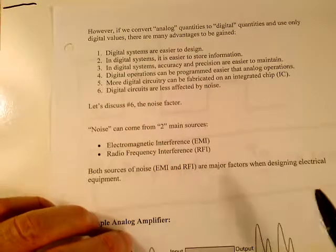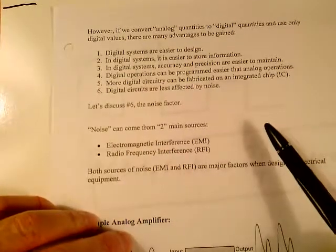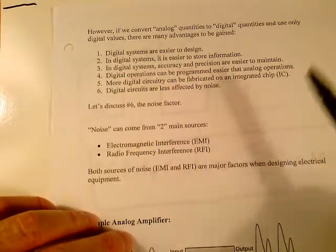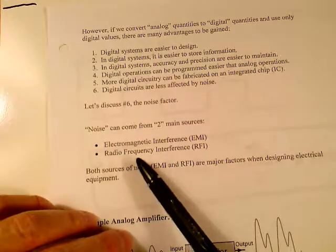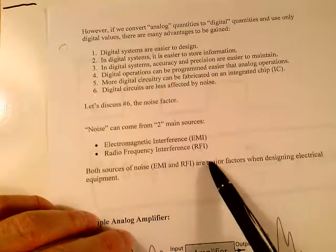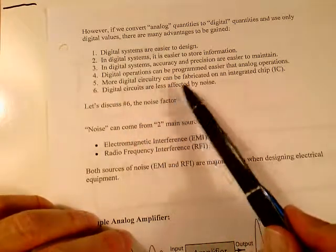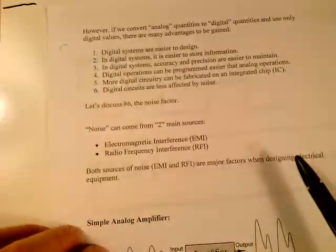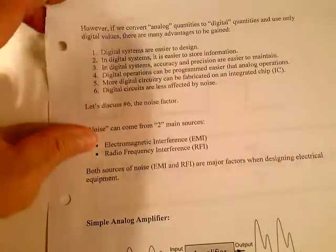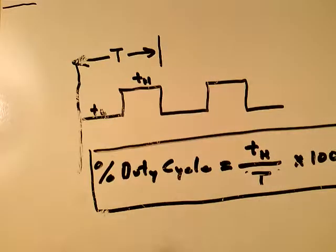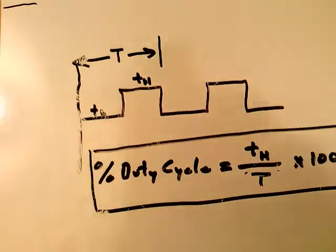Let's discuss number six, noise. We're not talking about a rock band here. We're talking about electromagnetic interference, EMI, or radio frequency interference, RFI. Digital circuits are less affected by noise. Let's take a look here on page five and page six. I'll explain why.